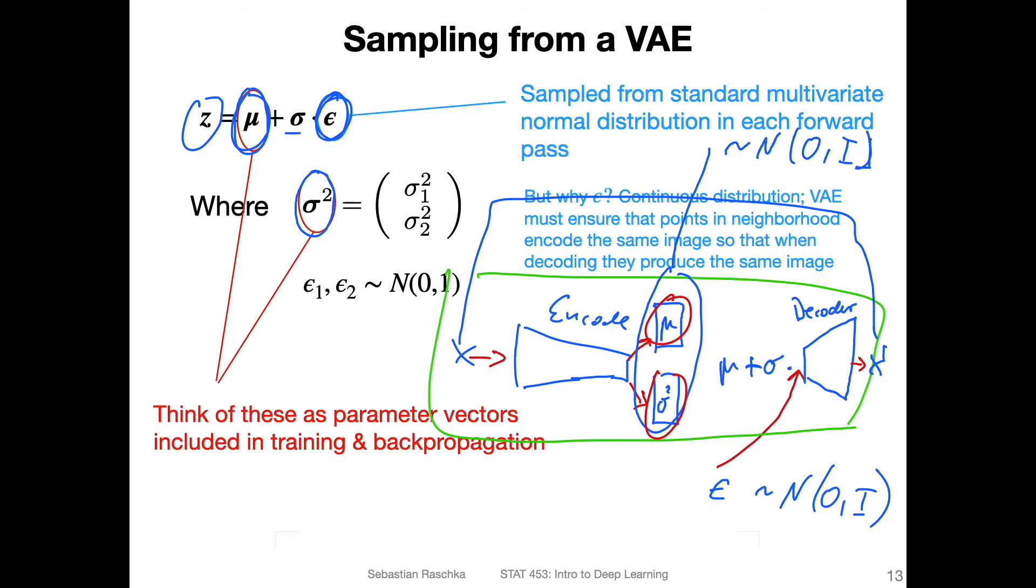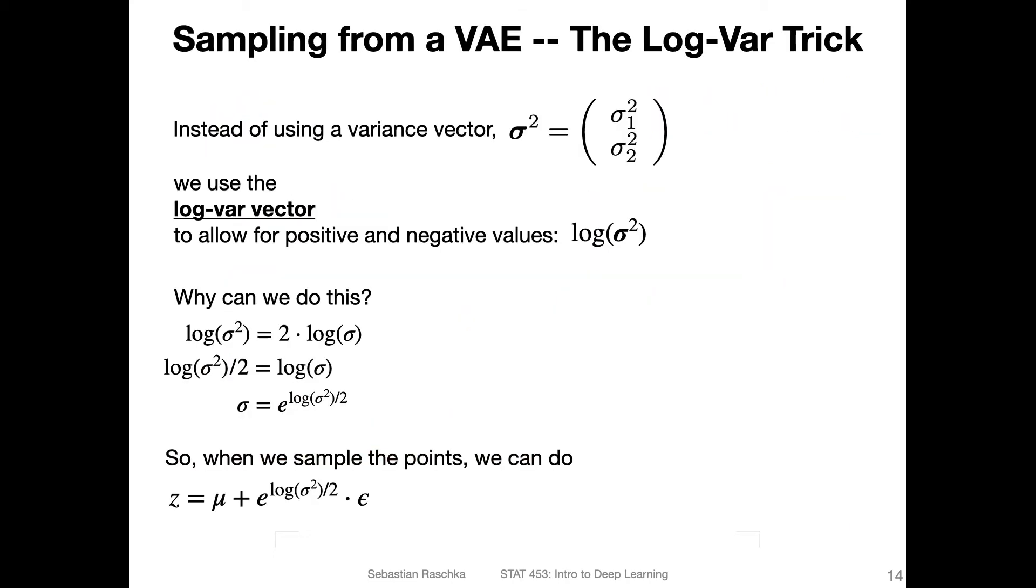Alright, so instead of using this variance vector here in the network, we are using the log variance. Why are we doing that? This will allow us for positive and negative values. In this way, if we only had a variance vector there, we could only have positive values. And it's kind of a bit tricky, I would say, to learn this during backpropagation. To make the learning a bit more stable or better, we will use the log of this variance vector. And then we will sample as follows as shown here on the bottom. So instead of sampling what I showed you before, instead of saying we draw the sample like this, we now replace this one by e to the power of log of the variance vector divided by two.